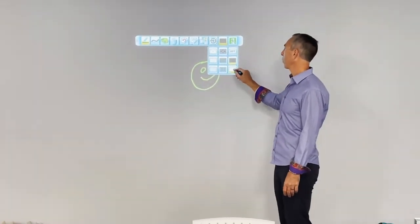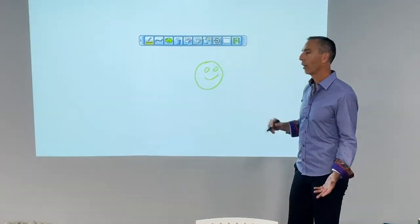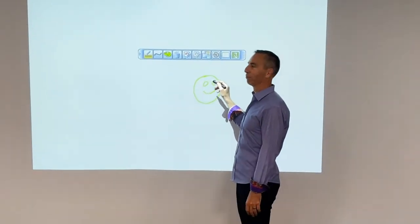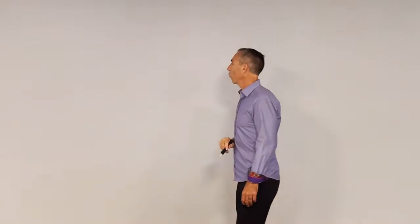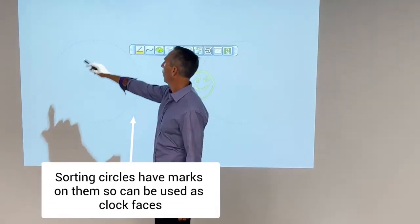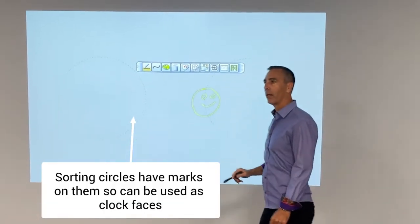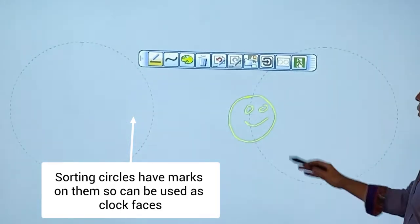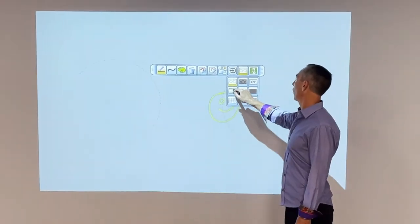All of the screens come in two colors, black and white. Dayglo doesn't work so good on white. They also have sorting circles. You can see also that the hours are marked there, so you can also use them to sort. That comes in black and white as well.